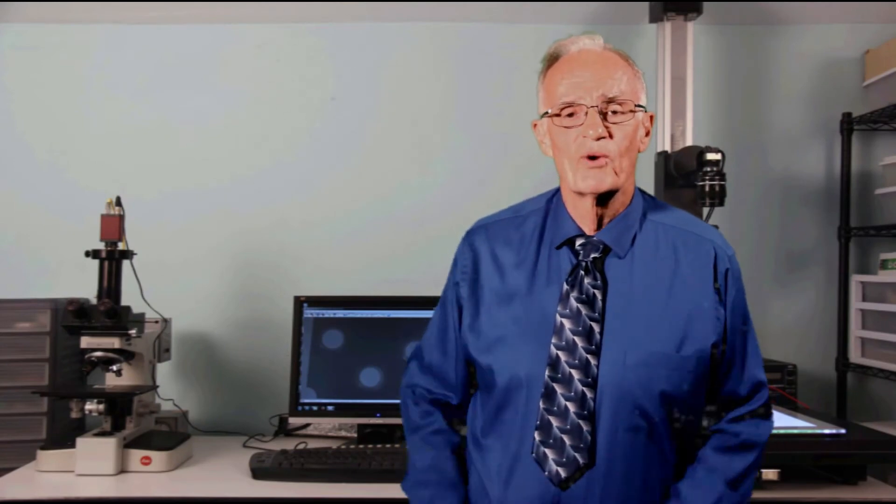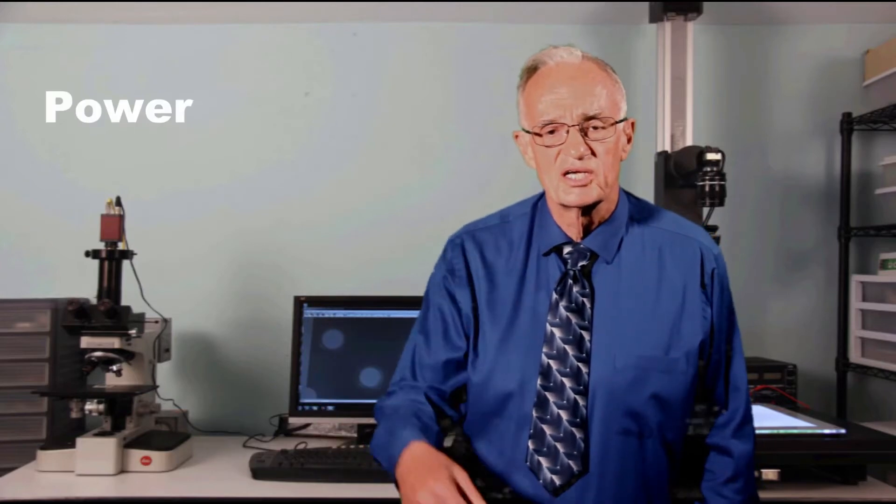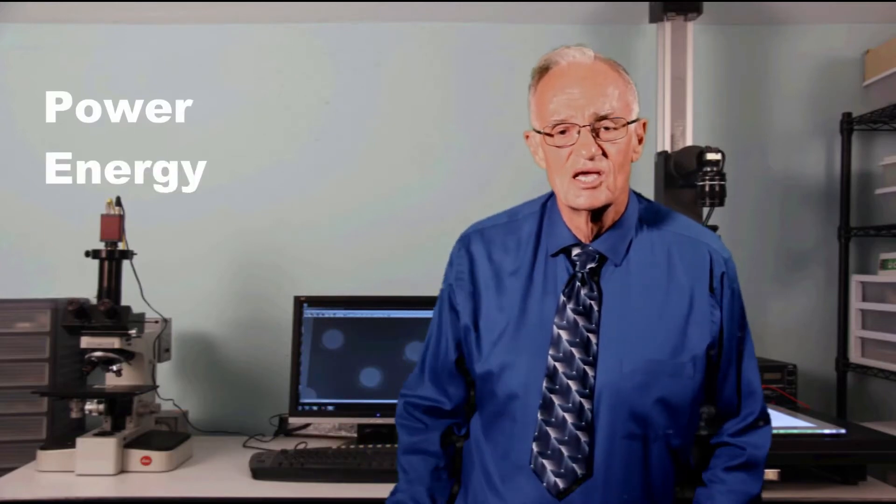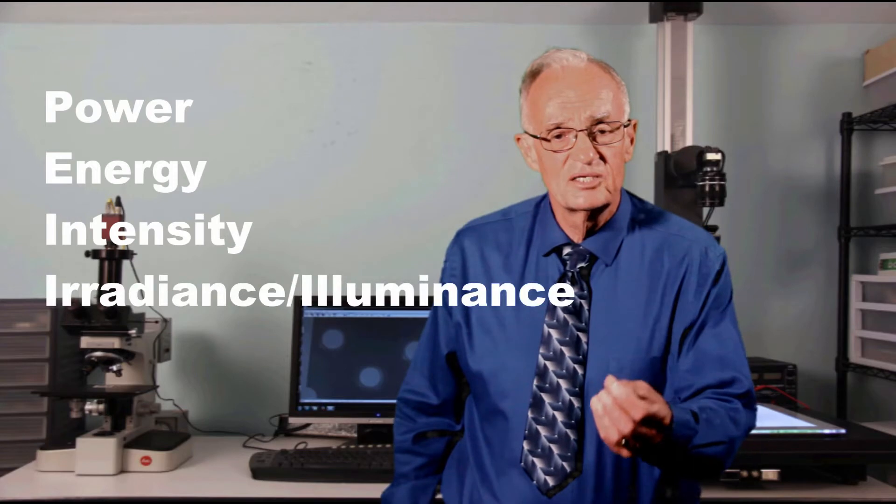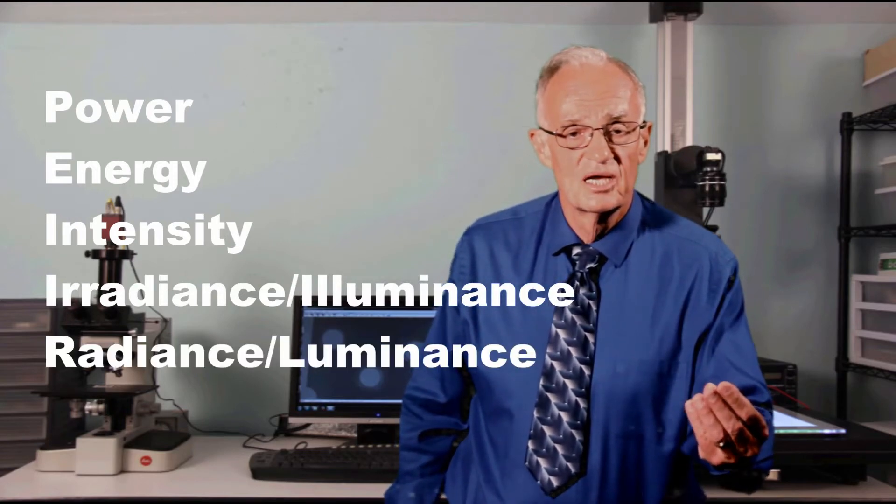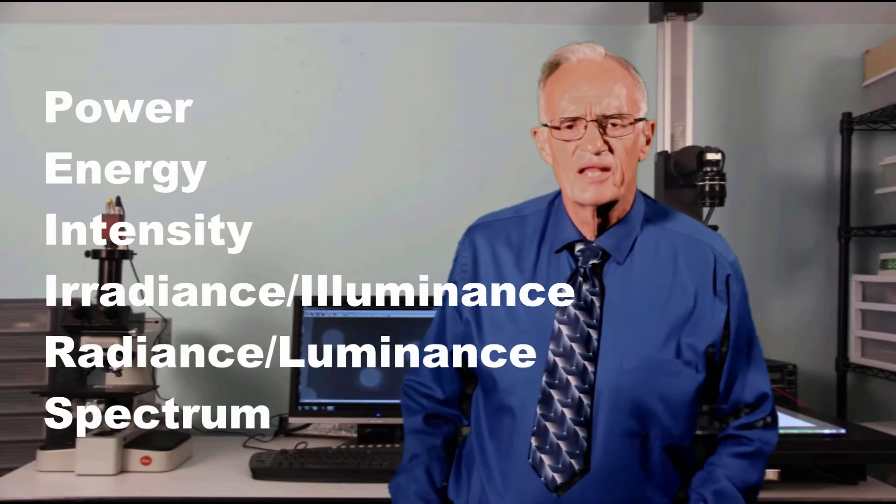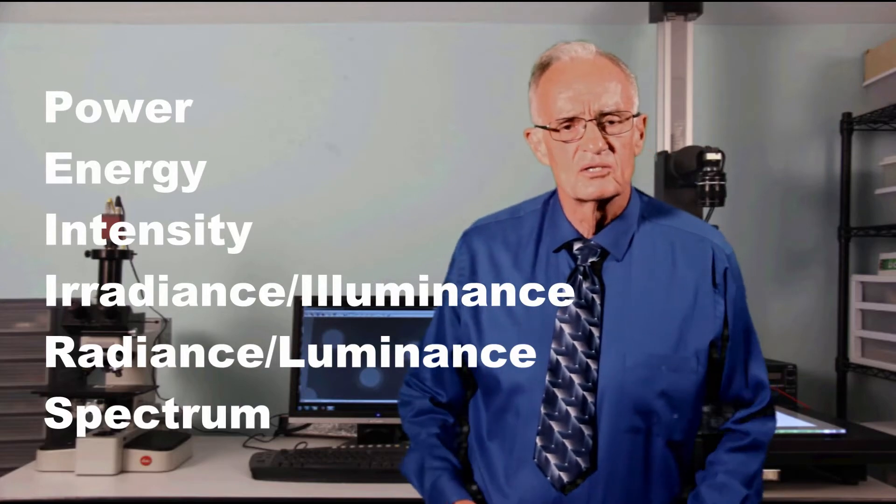This video covers six different ways light is measured: power, energy, intensity, irradiance or illuminance, radiance or luminance, and spectrum, and the factors that complicate those measurements.